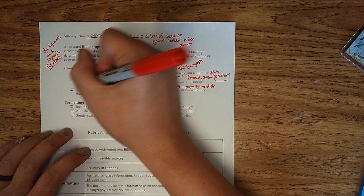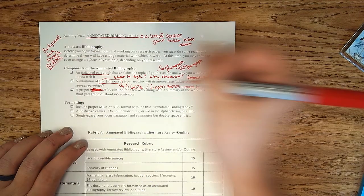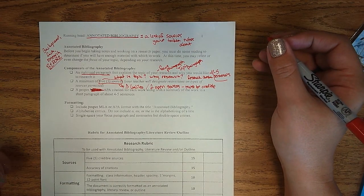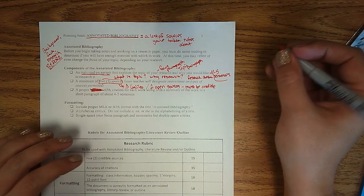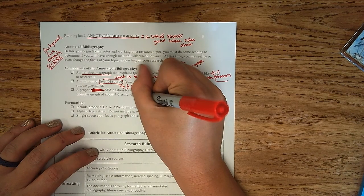You're going to have a proper APA citation. We don't do MLA here at Grovetown High School. Senior project is done in APA. It's just much more common in the real world. For each of your works with a summary of the work in about a short paragraph of four to five sentences. I strongly recommend leading more towards five sentences.